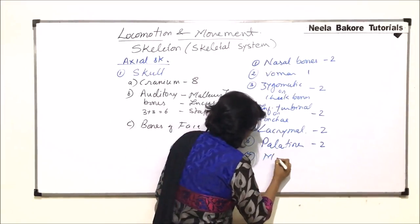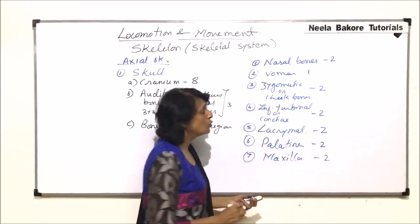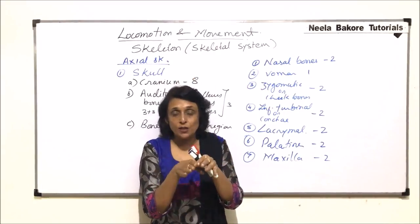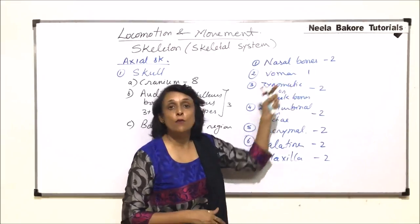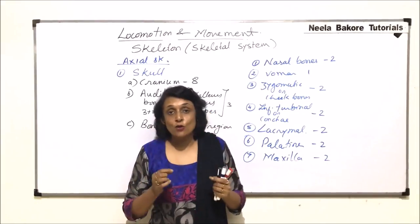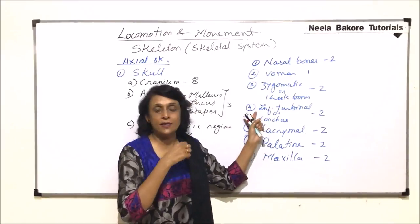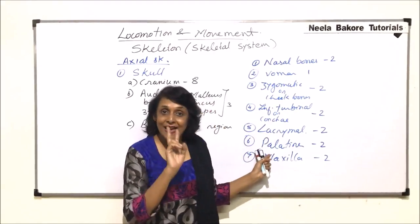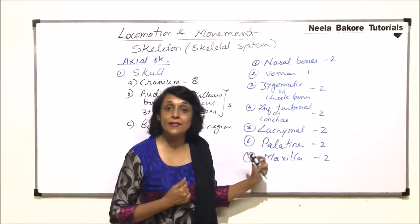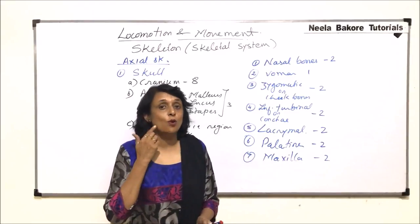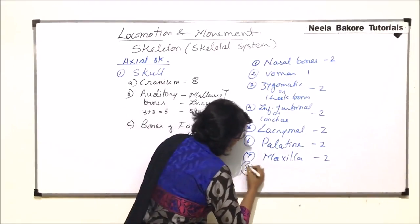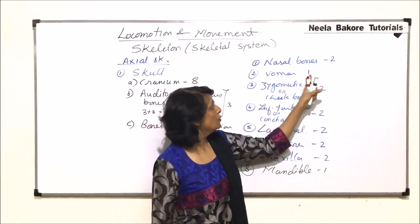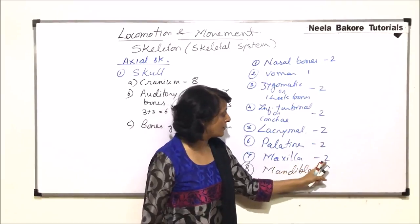Then we come to the upper jaw, which is the maxilla — again two in number. So counting: two nasals, one vomer, two zygomatic, two inferior conchae, two lacrimal, two palatine, and two maxilla. The lower jaw is the mandible, which is a single bone. Counting all together gives us fourteen bones of the face region.